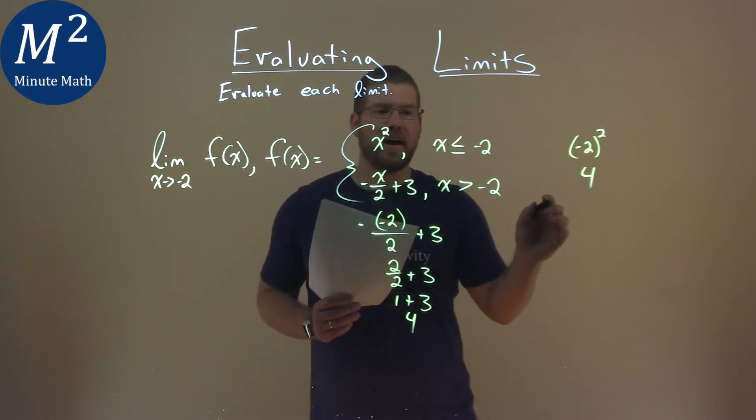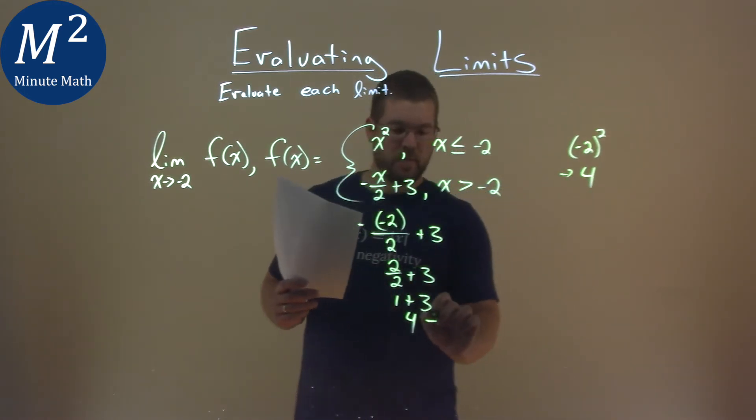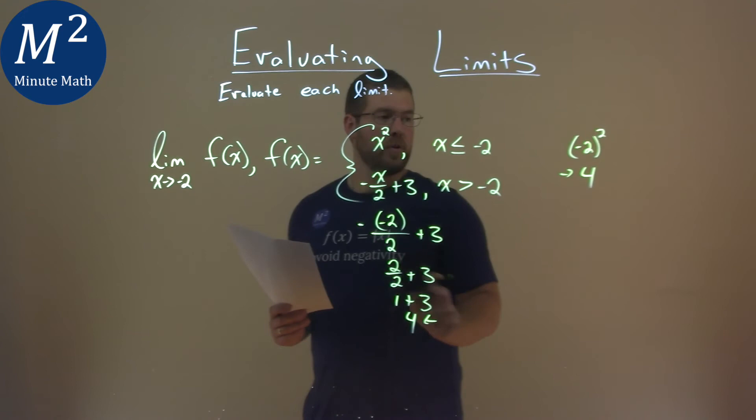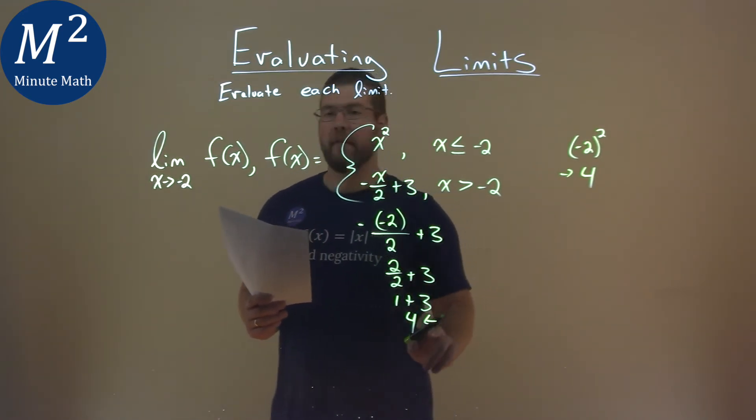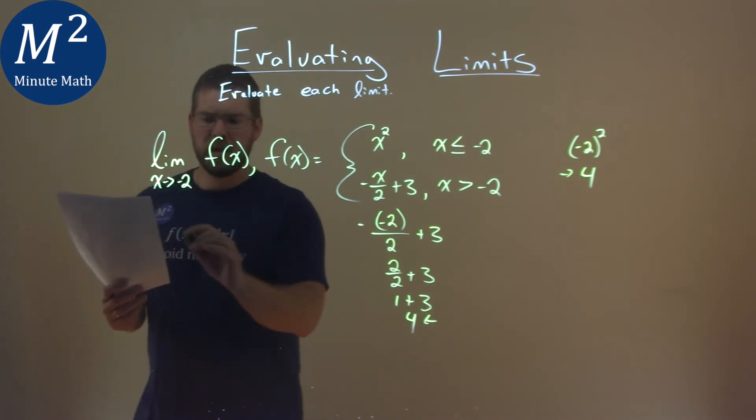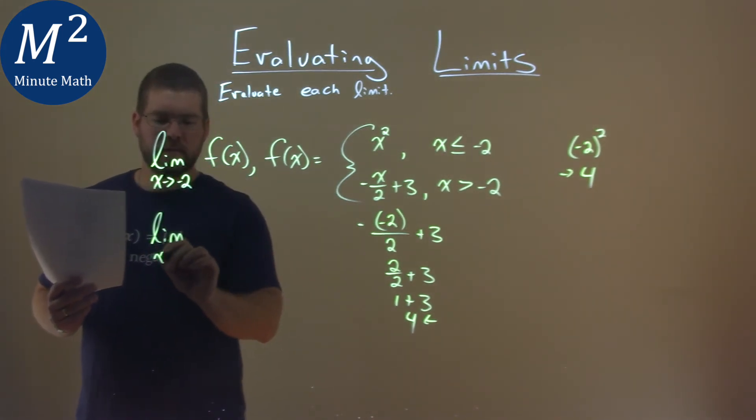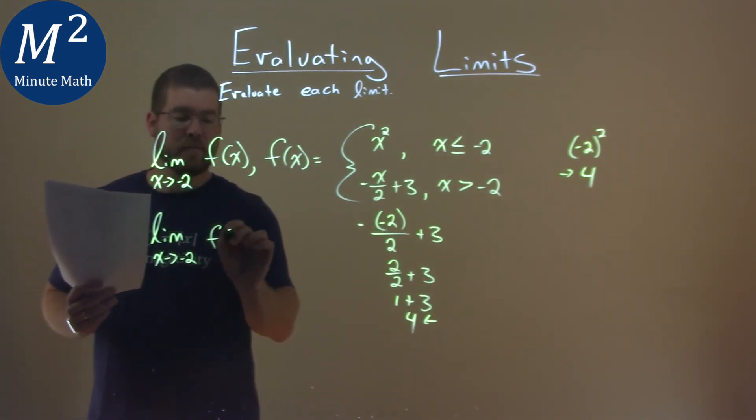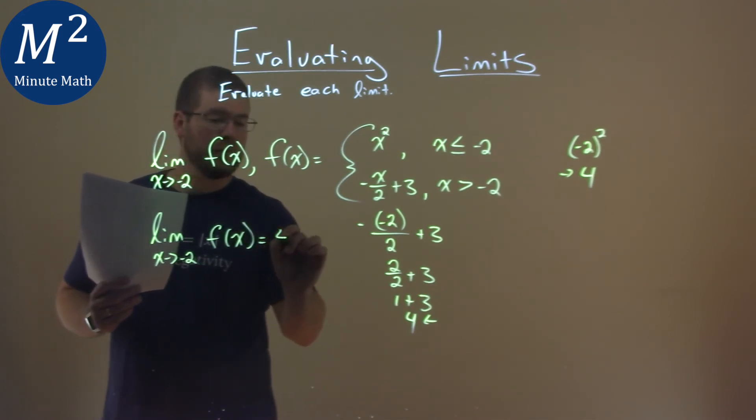So from the, what is it, this is the left and this is from the right, negative 2, we are both approaching 4. They're both the same value on left and right where it's approaching. So we can say that the limit here as x approaches the negative 2 of f of x is equal to a positive 4.